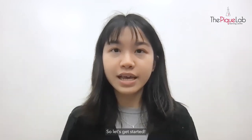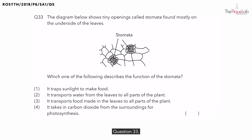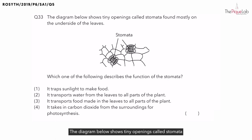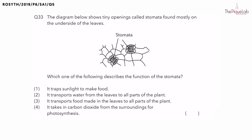So let's get started. Question 33. The diagram below shows tiny openings called stomata found mostly on the underside of the leaves. The question is asking: which one of the following describes the function of the stomata?